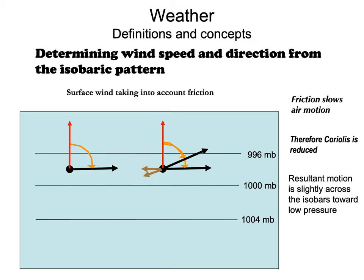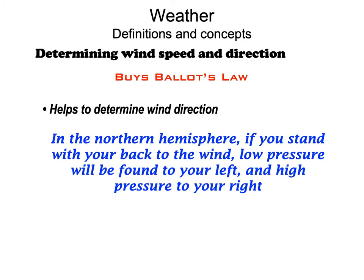Now let's throw friction into the mix. Friction slows things down, acting in opposition to motion. It won't change the pressure gradient force, but it will reduce the Coriolis deflection because Coriolis is proportional to speed. With friction, we end up with the resultant motion not exactly parallel to the isobars, but cutting across them toward lower pressure.